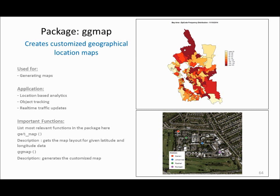ggmap is another package used to create geographical location maps in R. Its applications include location-based analytics, object tracking, and real-time traffic updates. In this example I am creating a Maryland geographical location map where each segment represents a zip code and the color represents the number of visitors — lighter color means fewer visitors and darker color means more visitors.